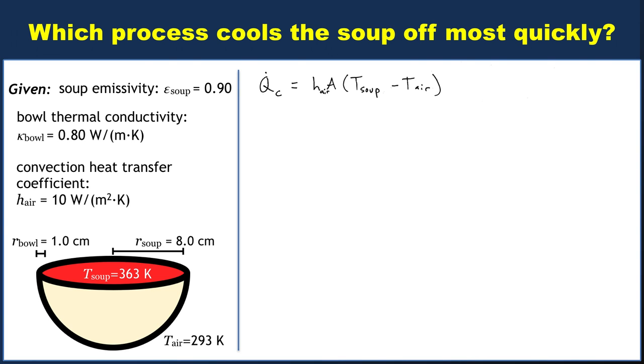So the relevant area here for convection has to be the top again, because we're not convecting out through the bowl. The bowl is solid, it can't convect, parts of it can't move around. What we need is some fluid to transport heat away, and the fluid in this case is the air above the soup.